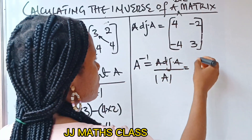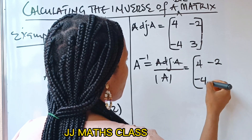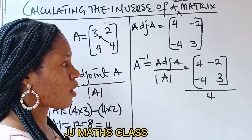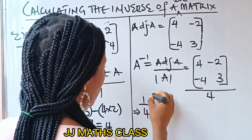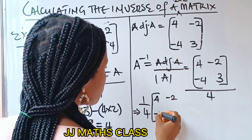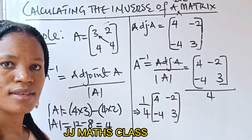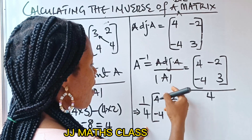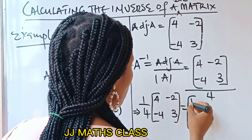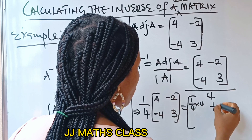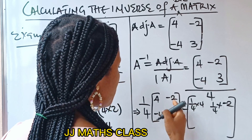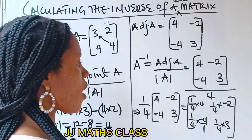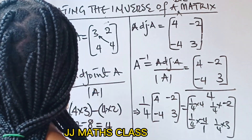What is the adjoint of A? It is the matrix 4, minus 2, minus 4, and 3, divided by our determinant, which is 4. This is the same as 1 over 4 multiplied by the matrix 4, minus 2, minus 4, and 3. We use this 1 over 4 to multiply everything inside the matrix: 1 over 4 times 4, then 1 over 4 times minus 2, then 1 over 4 times minus 4, and 1 over 4 times 3.